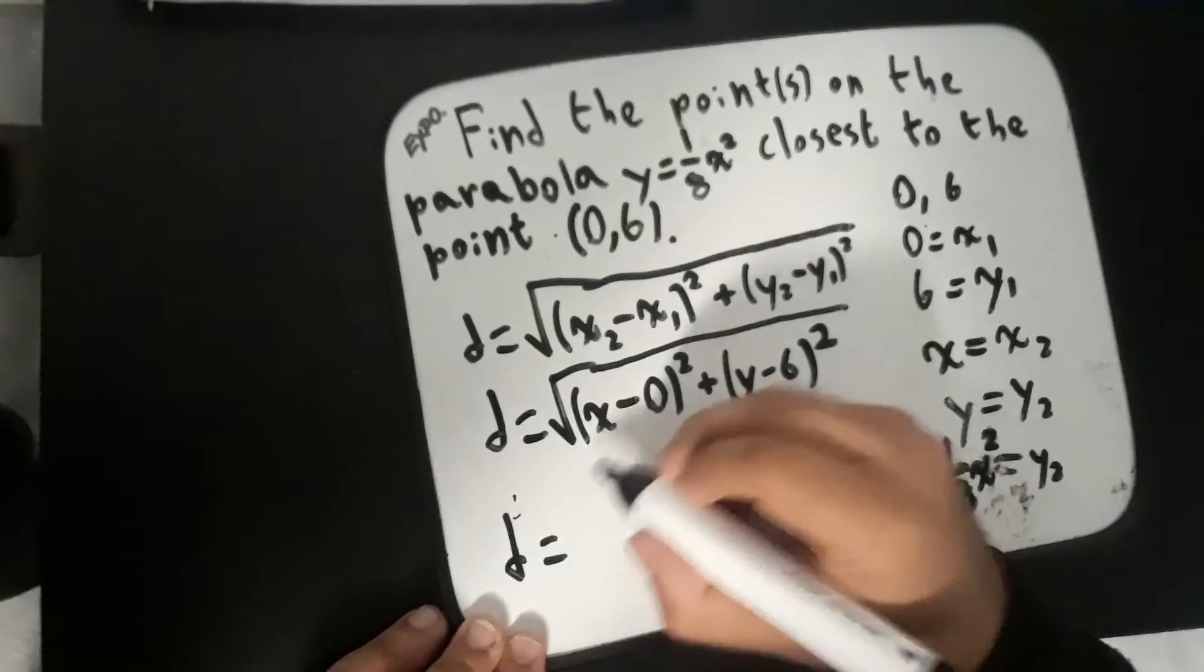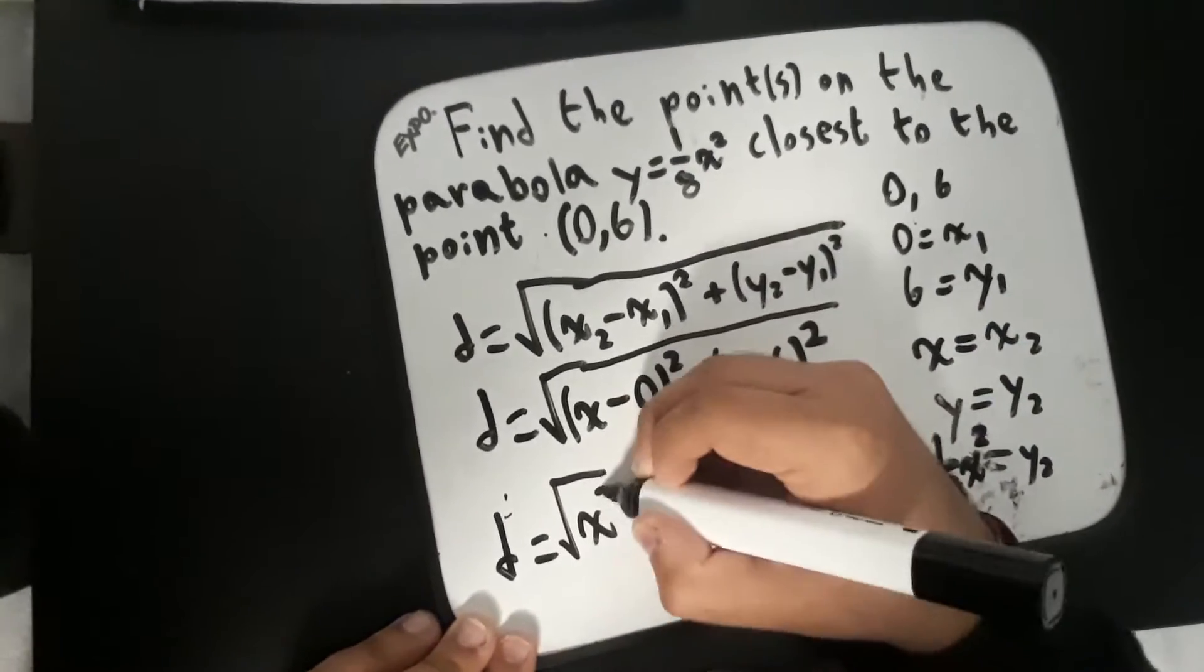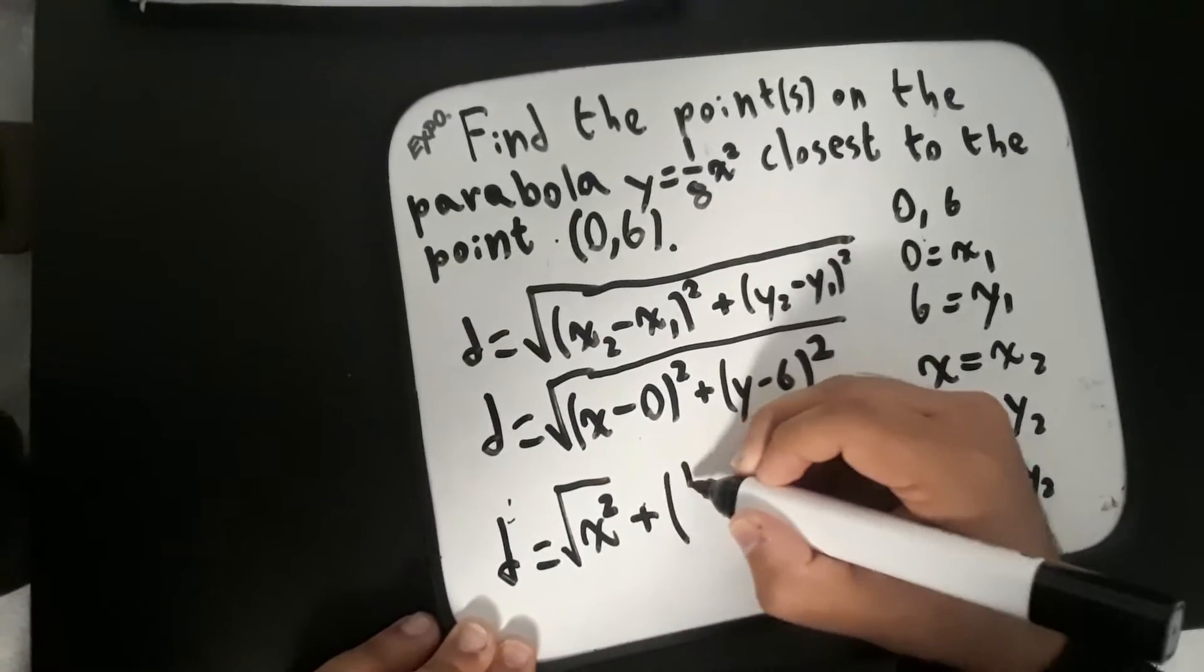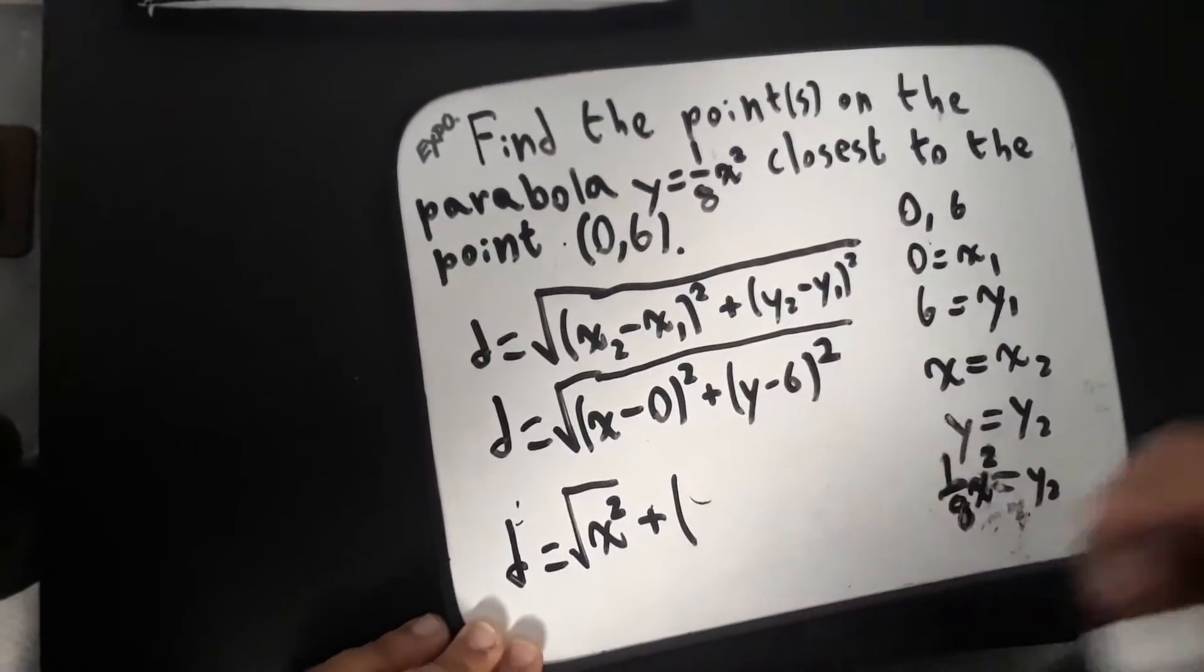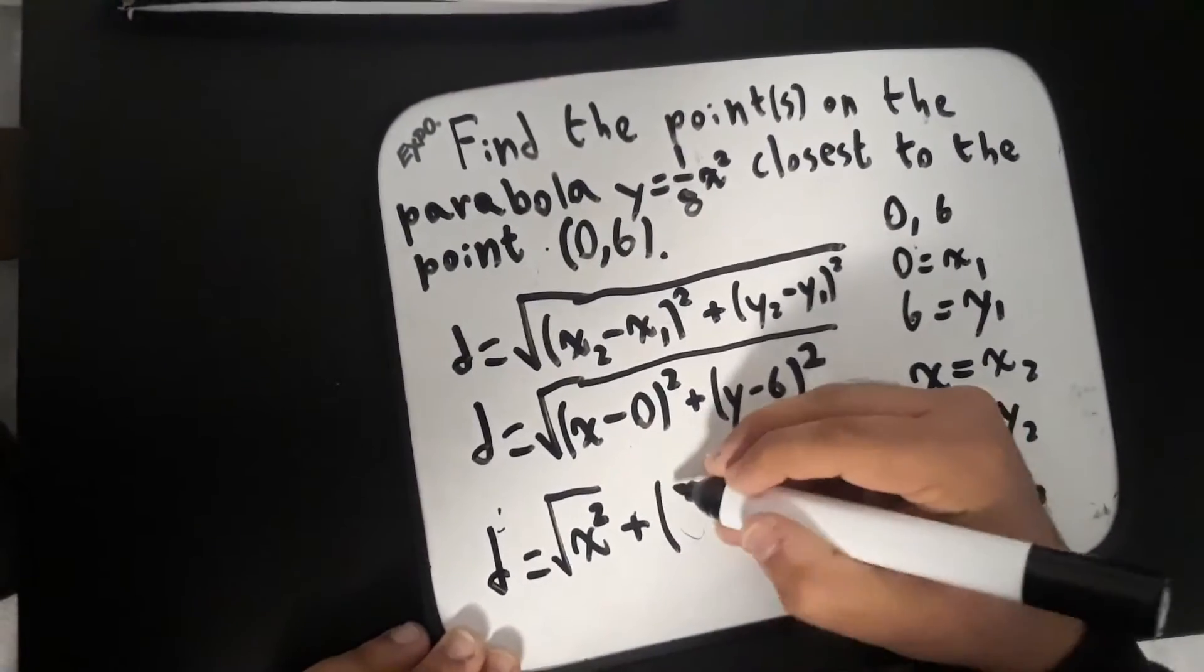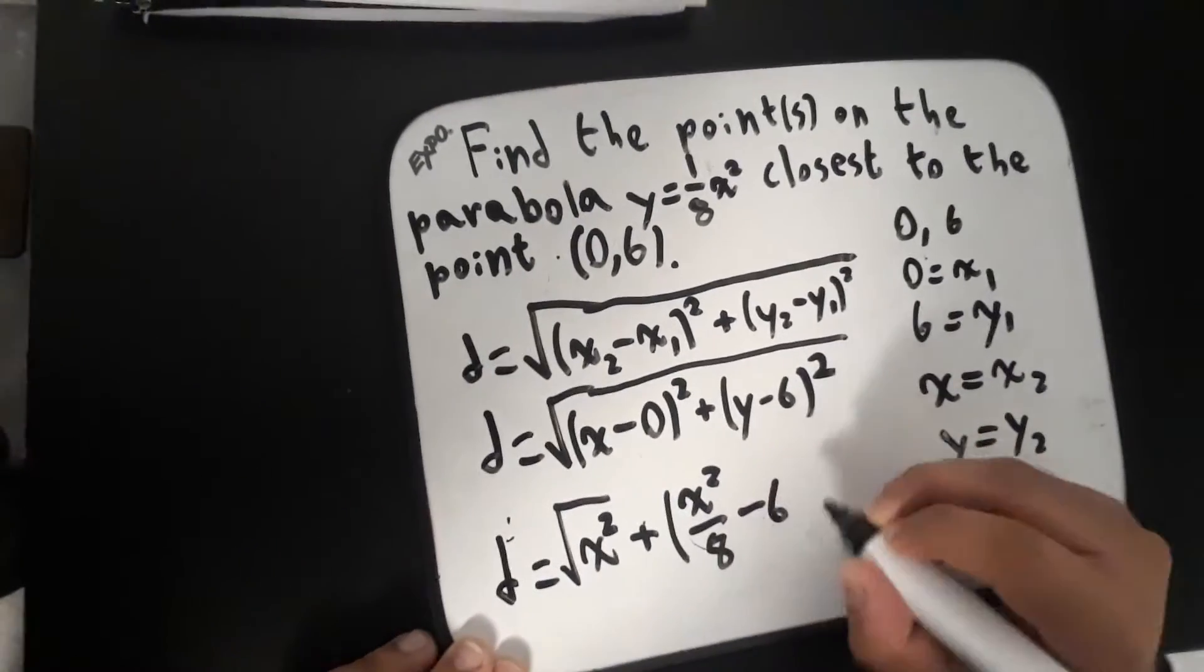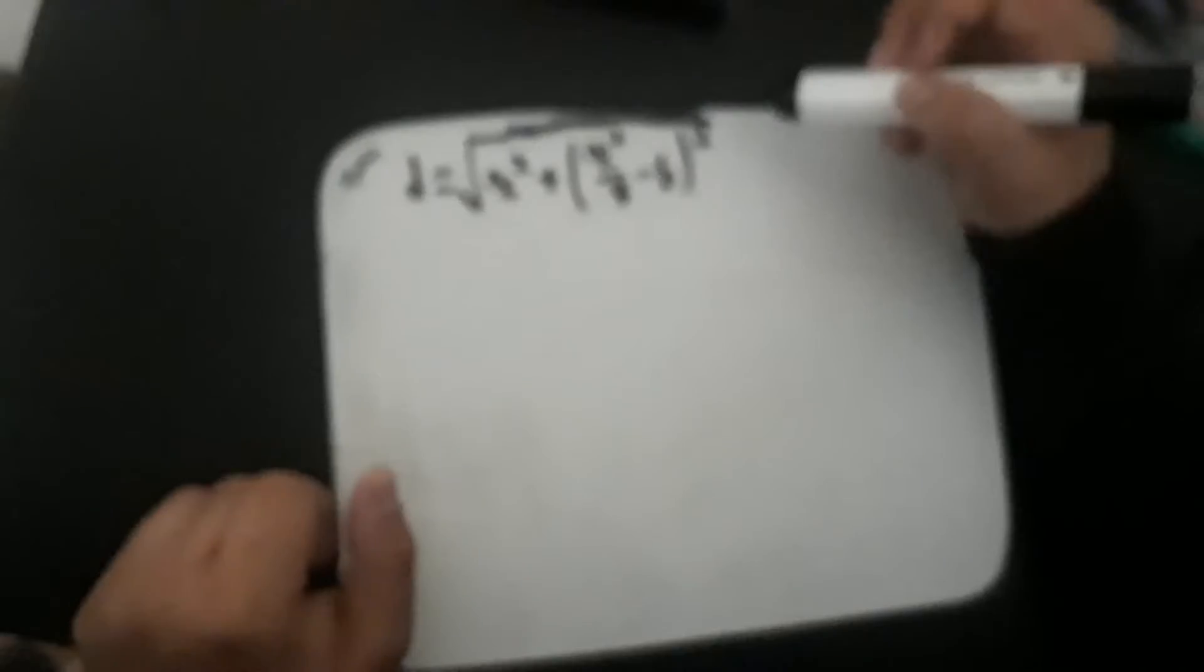d equals x minus 0 is equal to x, so this just becomes x squared plus 1 over 8 times x squared, which is x squared over 8, minus 6 squared.